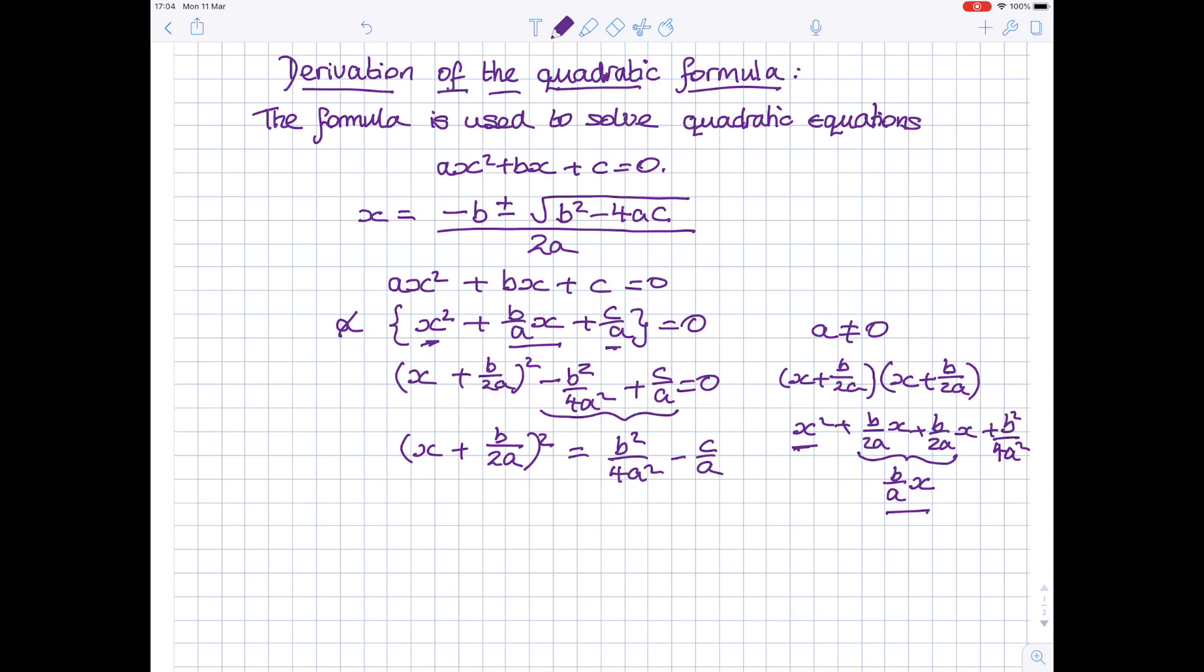I'm going to put the whole of the right-hand side over the common denominator, and the common denominator for 4a squared and a is just 4a squared.